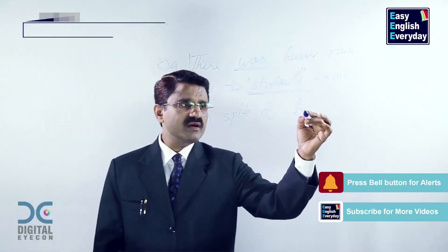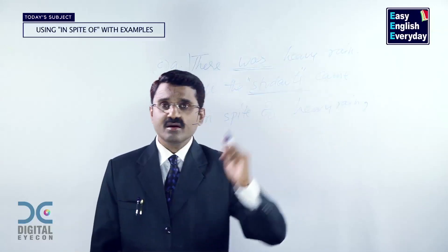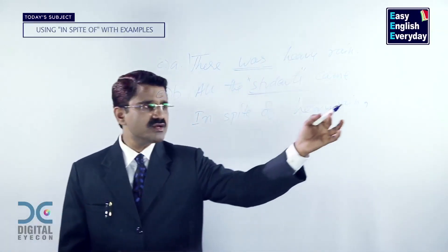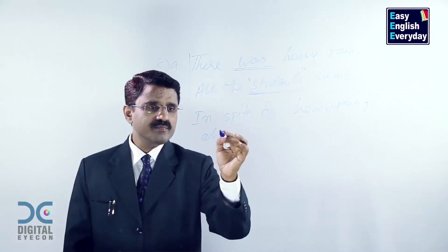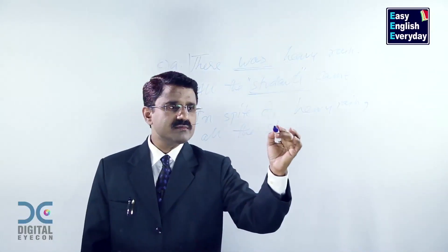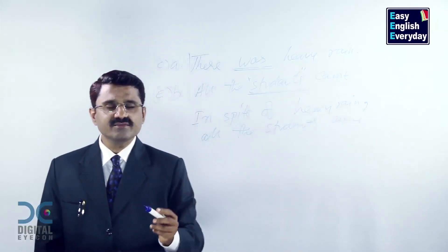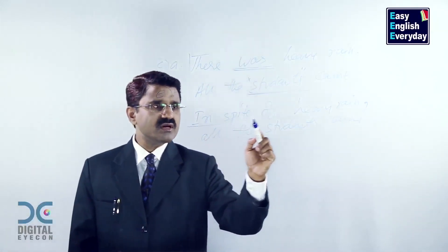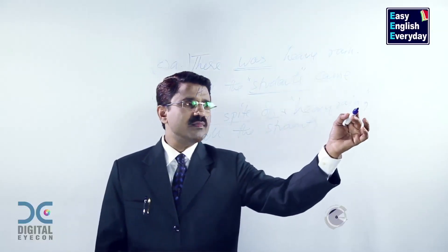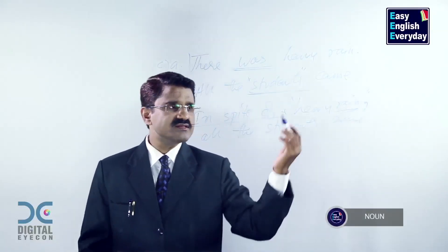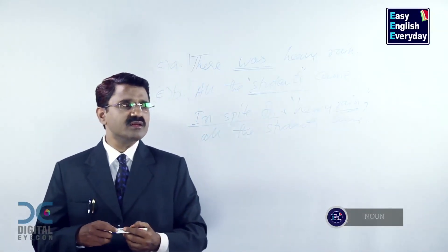In spite of heavy rain, all the students came. As I told you, to the right side of 'in spite of' we are allowed to keep a noun — 'heavy rain' — this is a noun, adjective plus noun. In spite of heavy rain, all the students came. Also, if it is written English, you have to place a comma after 'in spite of heavy rain'.